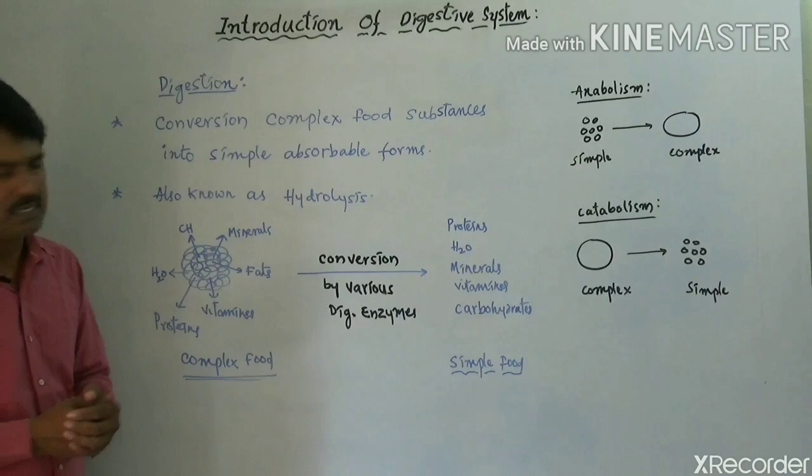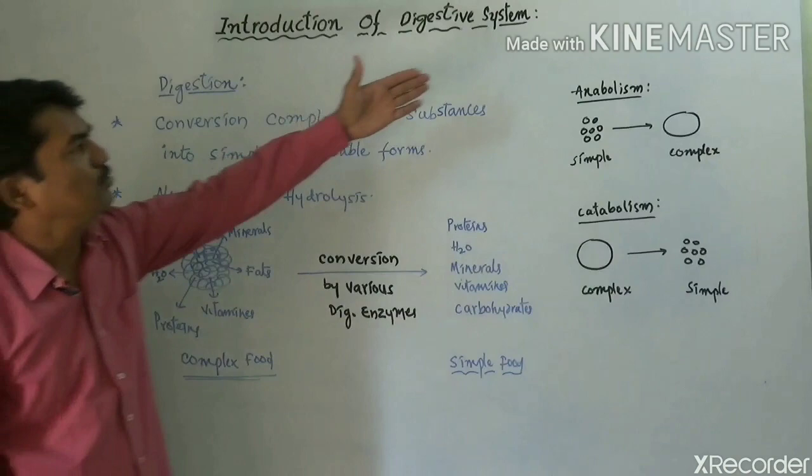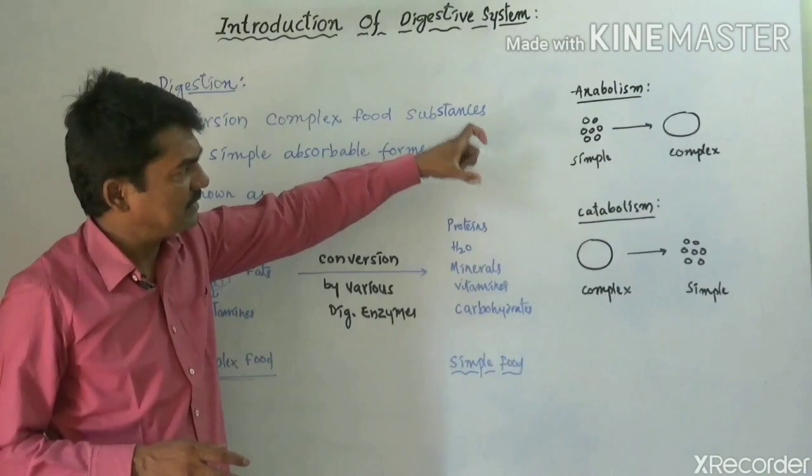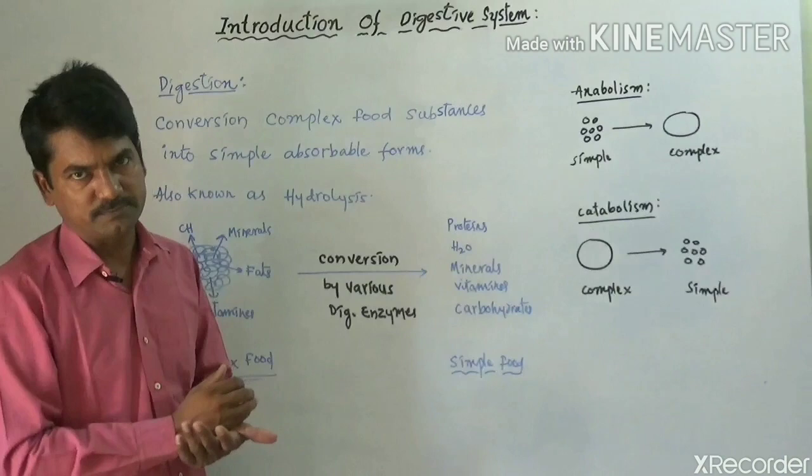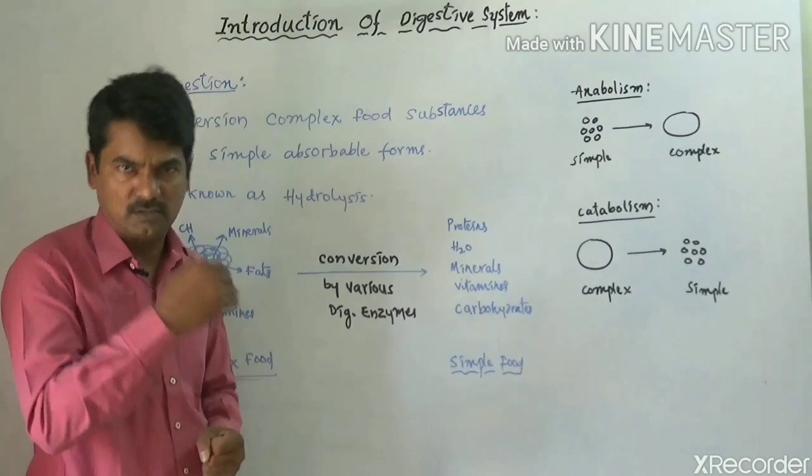Digestion involves two processes: anabolic process and catabolic process. In the anabolic process, simple absorbable food molecules are transformed into complex food molecules. In the catabolic process, complex food molecules are transformed into simple absorbable food molecules. Together, the anabolic process and catabolic process are known as metabolism.